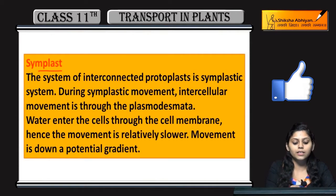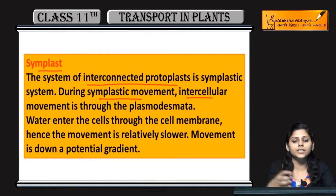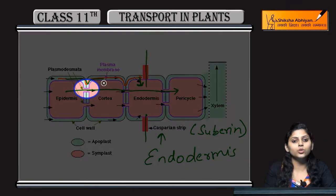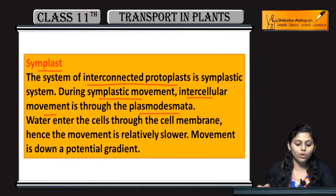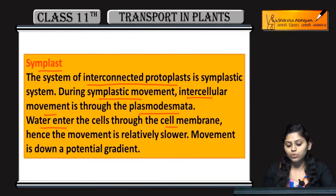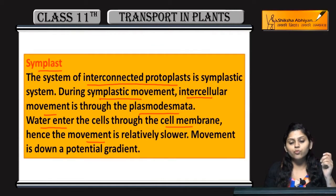Symplast pathway kya hai? Cell ke andar se hoti hai through interconnected protoplasts. Symplastic movement mein intercellular movement hoti hai cell se cell mein throughout the plasmodesmata. You can see plasmodesmata do cells ke beech mein hain — yahan se water aur minerals cross karte hain. Water enters the cell through the cell membrane. Apoplast mein cell membrane cross nahi karte. Isliye symplastic movement is relatively slower than apoplast.